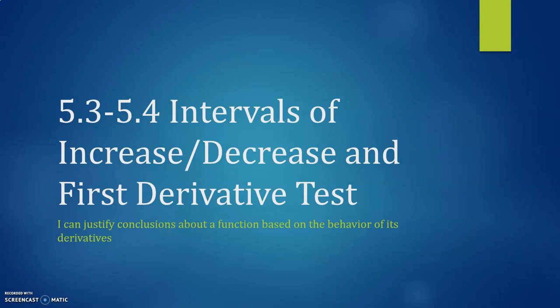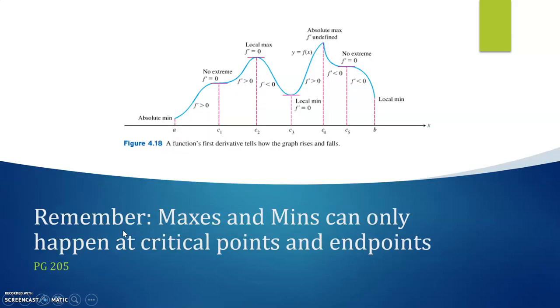We're going to continue looking at what our derivative tells us about our function. Last section, we talked about finding critical points using the derivative. This section, we're going to talk about intervals of increase and decrease and the first derivative test. A thing to remember from last section: maximums and minimum values can only happen at critical points and endpoints. It doesn't mean that all critical points have maximum values.